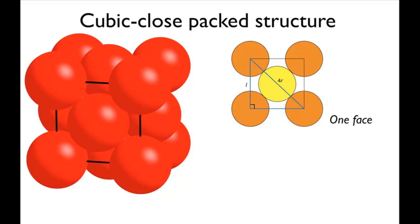Knowing this, you can calculate the distance l using Pythagoras' theorem, which states that for a right-angled triangle, the sum of the squares of the side length is equal to the square of the hypotenuse. Applying Pythagoras' theorem to the blue triangle shown, you can see that l squared plus l squared equals 4r squared. This means that l is equal to the square root of 8 multiplied by r.